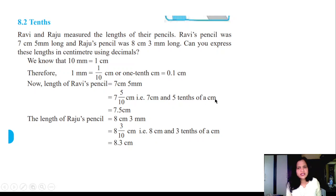The length of Ravi's pencil is 7 cm 5 mm, which is 7 cm and 5 tenths of a centimeter, that is 7.5 cm. The length of Raju's pencil is 8 cm 3 mm. 1 mm is equal to 1 tenth of a centimeter, so 3 mm is 3 by 10 cm, that is 8.3 cm.